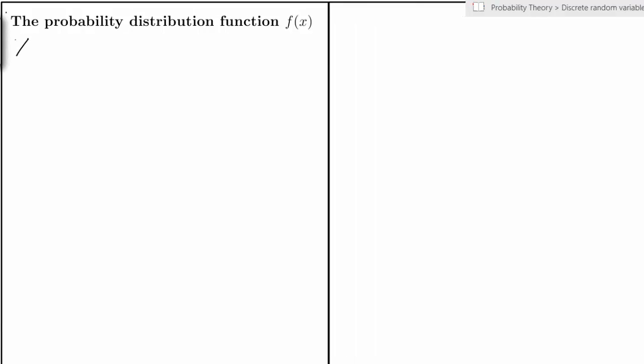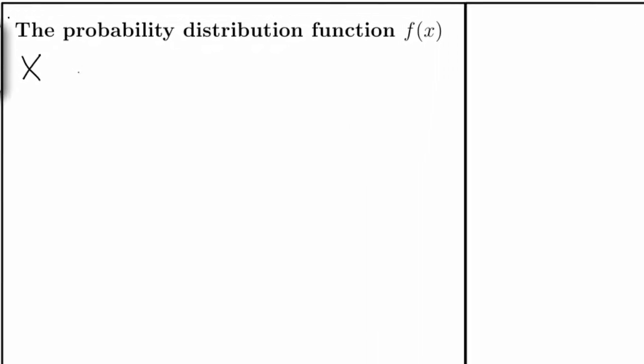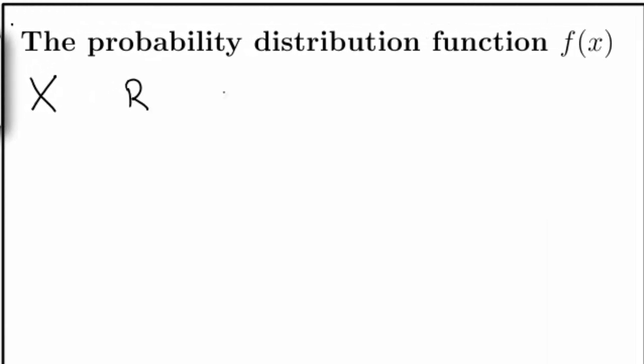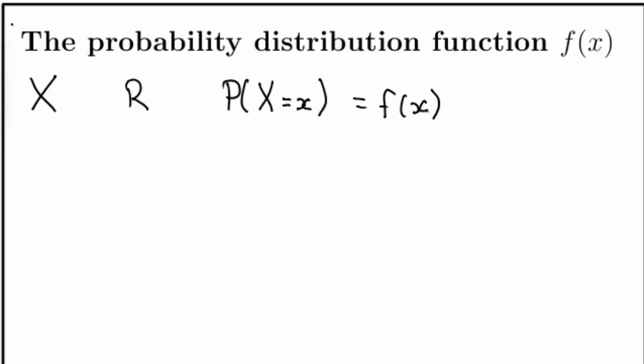If x is a random variable with some given range r, then we have this notation: probability capital X equal to lowercase x, denoting the probability of the random variable X taking on the value small x, where small x is a real variable. As this probability depends on x, it's really a function of x. We can save some characters by simply writing this as f of x, also making it more clear that it's a function of x.